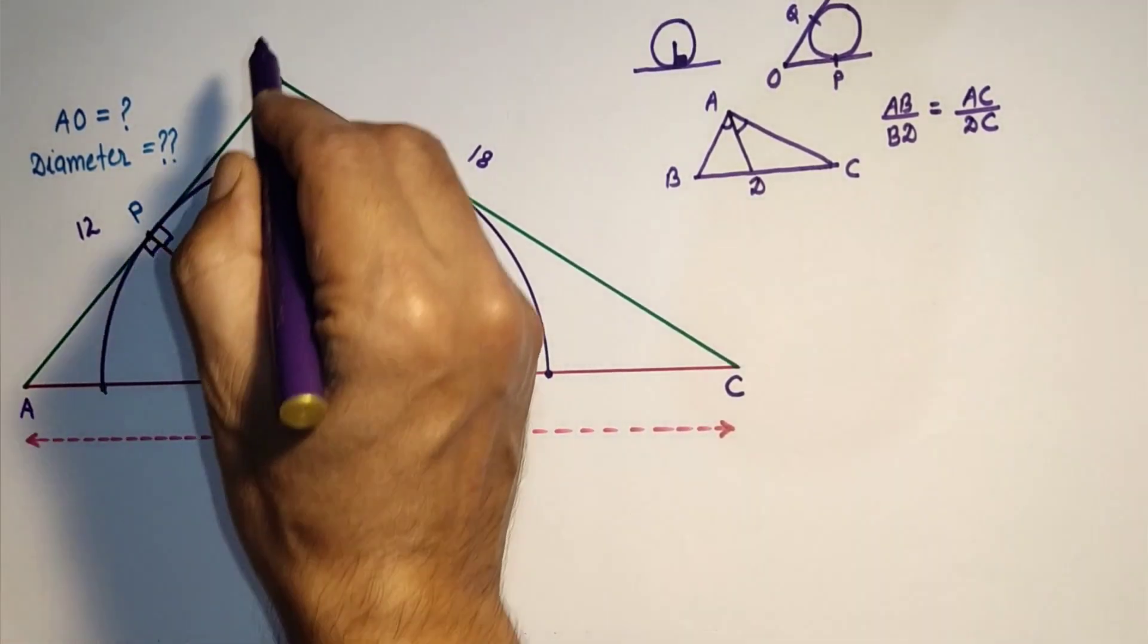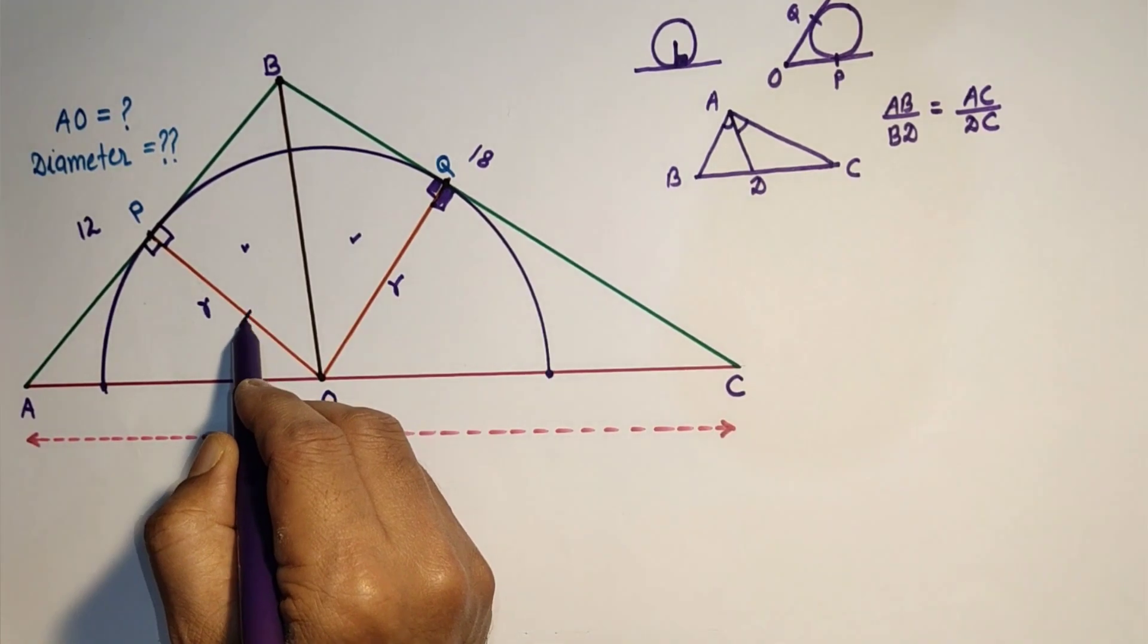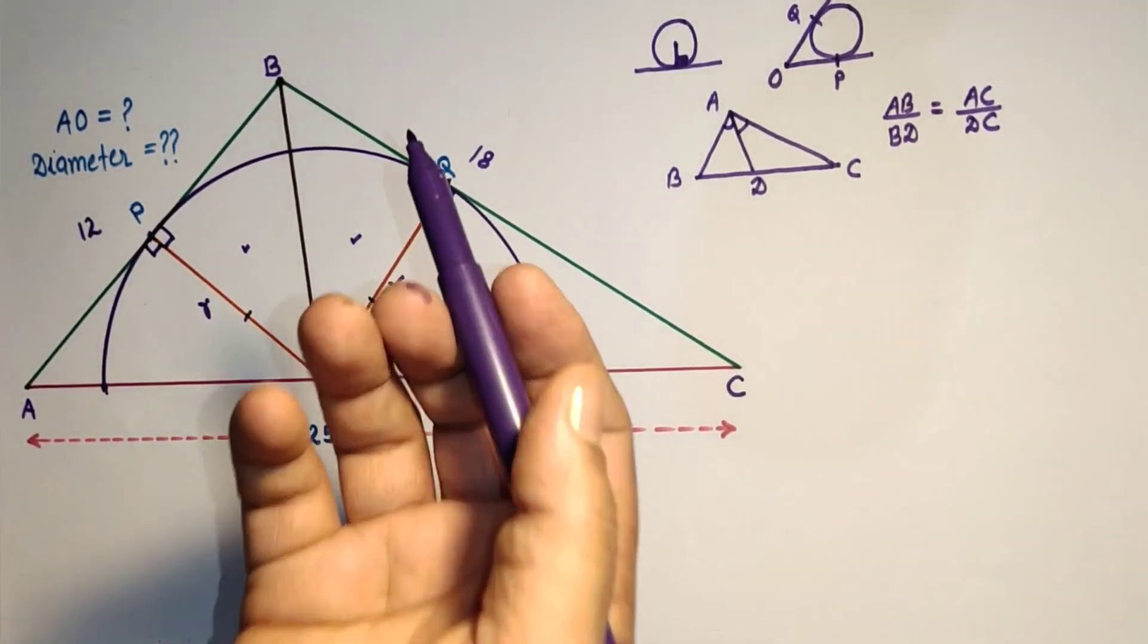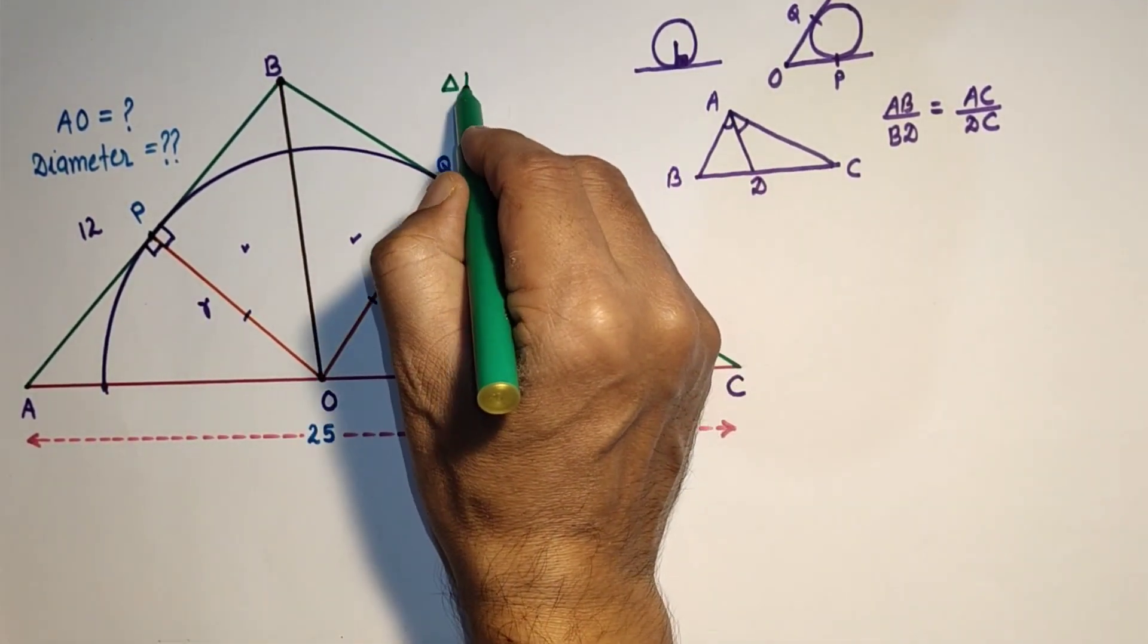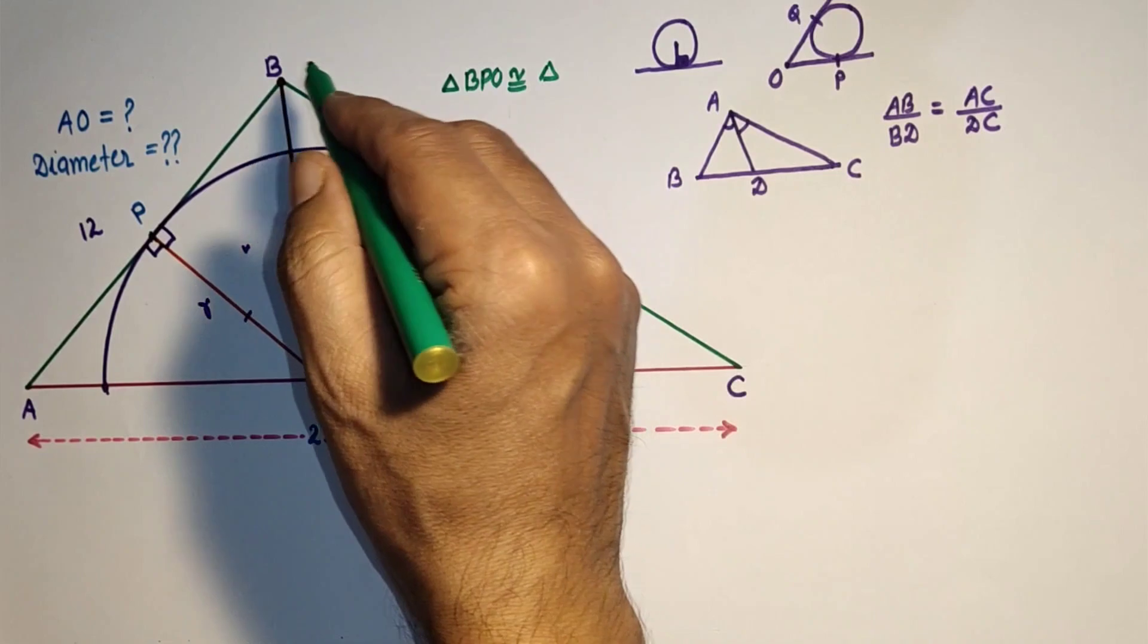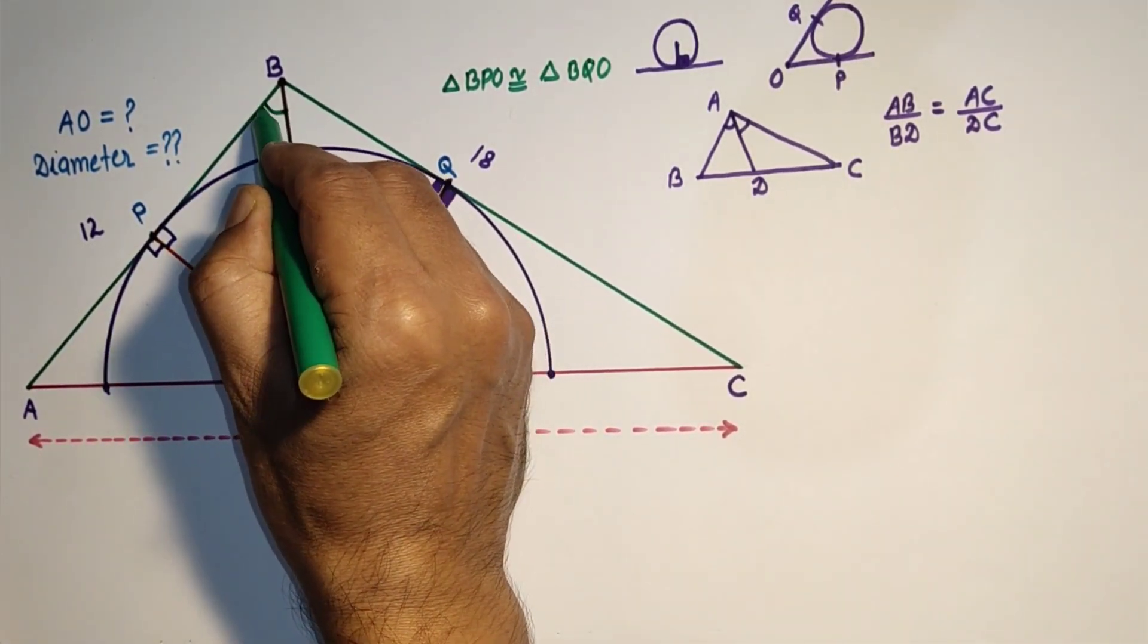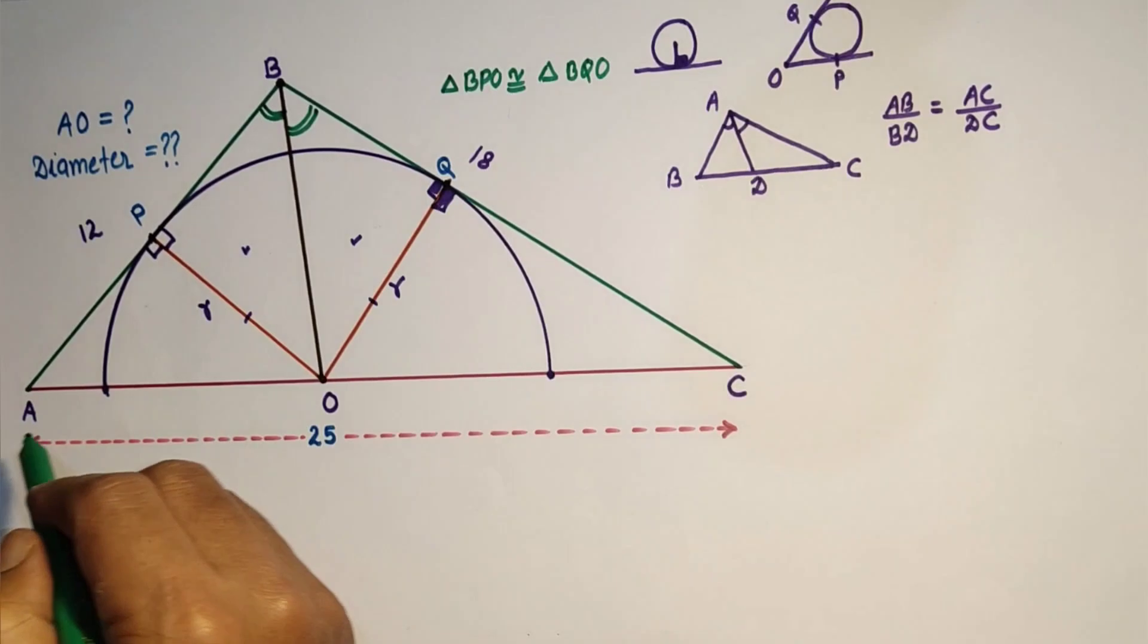Considering these two triangles, triangle BPO and BQO: OP is equal to OQ (that's radii), OB is equal to OB (it is common in both triangles), and BP is equal to BQ. So by SSS test these two triangles are congruent. Triangle BPO is congruent to triangle BQO. From the congruency, corresponding angles of congruent triangles are equal. Angle BPO means this angle is equal to this angle. So by angle bisector theorem, because this BO bisects the angle ABC.